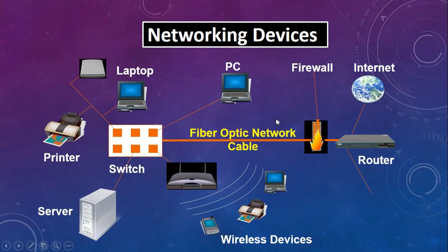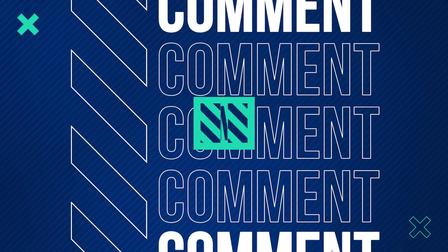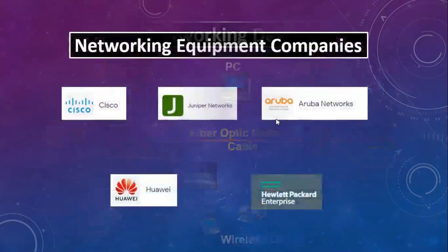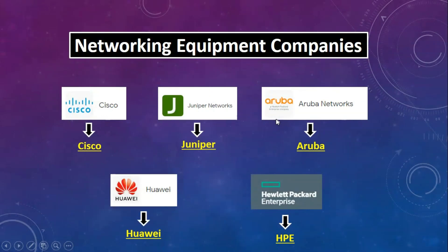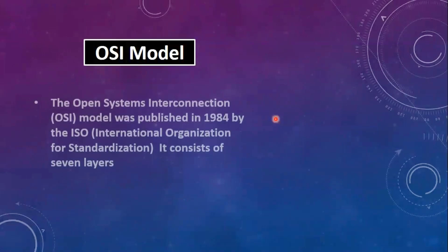If you like this video, please like and subscribe to our channel and share this video. Top 5 networking equipment companies — these 5 companies are major networking device and networking solutions providers across the world: Cisco, Juniper, Aruba, Huawei, HPE. These companies' products are used across the world.